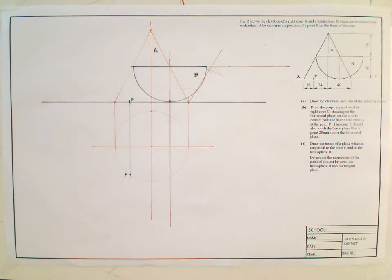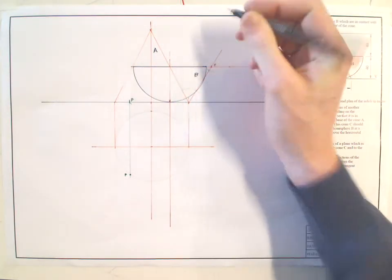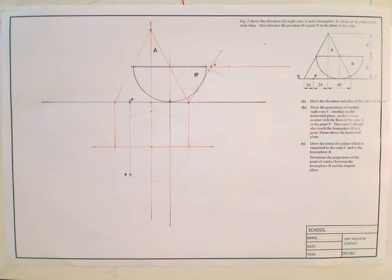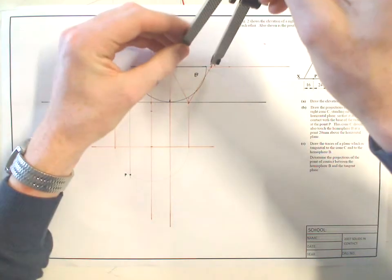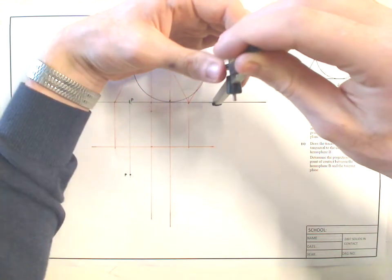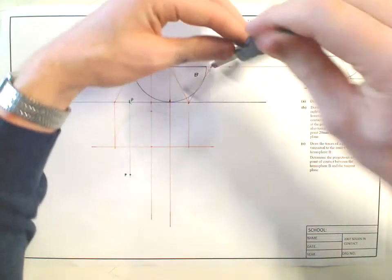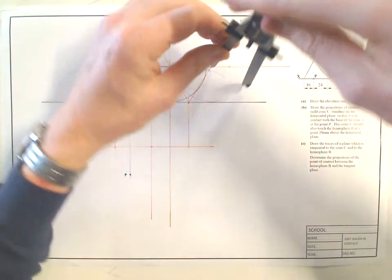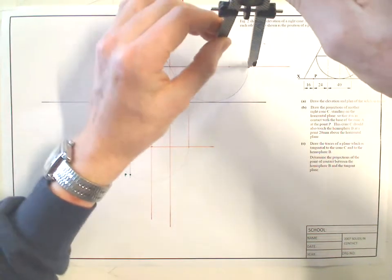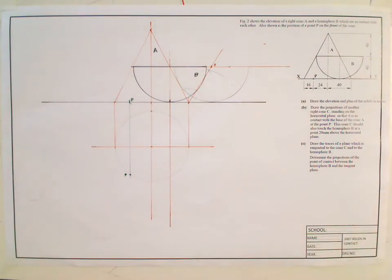So what I've got then, this here is the center of my ghost hemisphere. And I can draw in the ghost hemisphere as well. This is light lines as well, just for construction. So that there is my ghost hemisphere there.